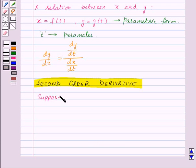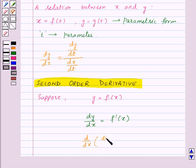Suppose we are given y equals f of x. Then we will differentiate it with respect to x and we will get dy by dx equals f dash of x. And now if f dash of x is differentiable, then we can differentiate this equation again with respect to x. So we get d by dx of dy by dx equals f double dash of x.